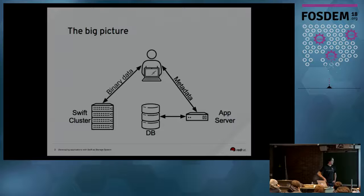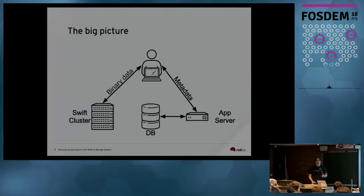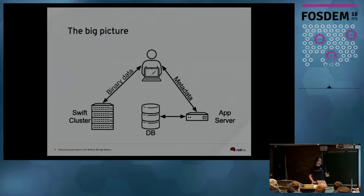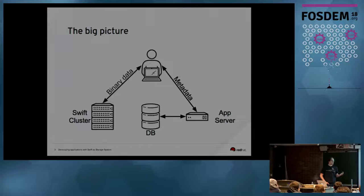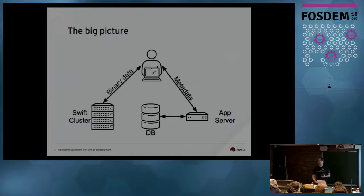As an application developer, using an object storage is really nice because it separates the application logic from the data path logic. When you write an application and want to store large data files like videos, you don't need to care about the data path or upload data through your application server. You can upload data directly to the Swift cluster and only store metadata within your application — for example, using a database or storing references with Elasticsearch — and let Swift handle the large data sets.